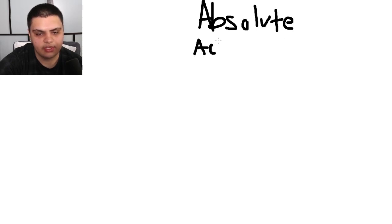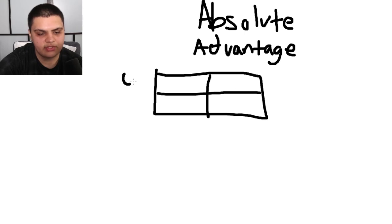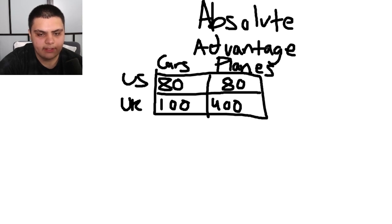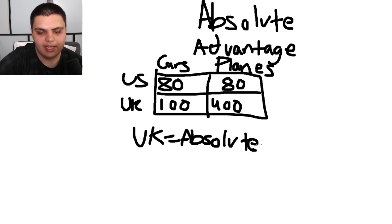Absolute advantage simply compares the numbers that two nations can produce of the same good. So if we take two countries — the US and the UK — and compare cars and planes: let's say the US can make 80 cars and 80 planes, and the UK can make 100 cars and 400 planes. Absolute advantage just looks at who can make more of a certain good — and for cars, it's the United Kingdom. So the UK has an absolute advantage in producing cars.